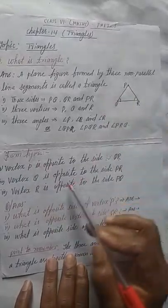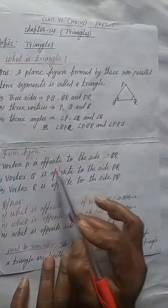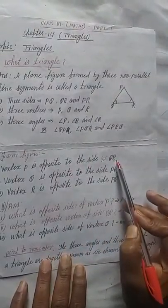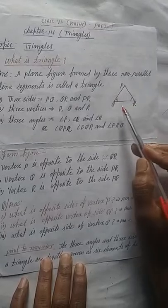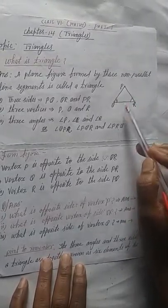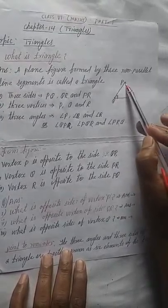From figures, we are getting like this. Vertex P is opposite to side QR. It means what? If anybody asks you, we can say, what is the opposite vertex of QR? So opposite vertex of side QR is P.